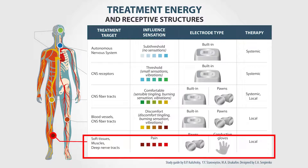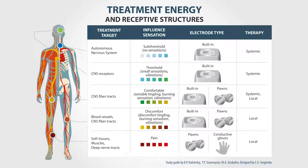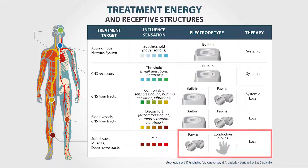The preferable electrode type also depends on the treatment energy level. We use the built-in electrode of the device for systemic therapy — the influence that causes the response reactions of the entire body. The conductive gloves and external electrode pads are used in local therapy, which is aimed particularly at the sub-electrode tissues.